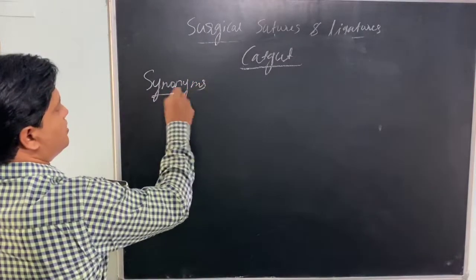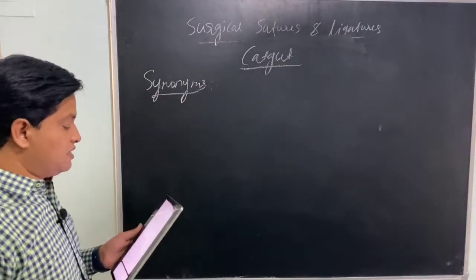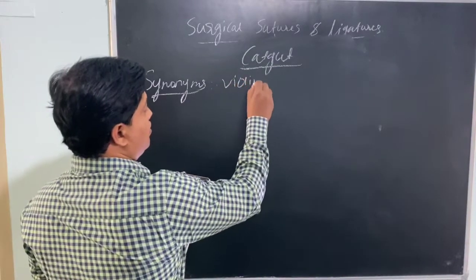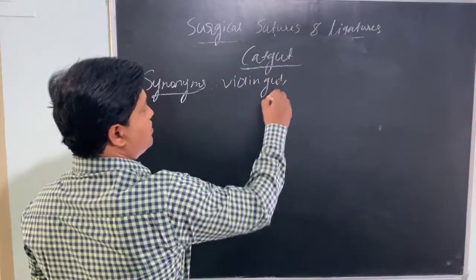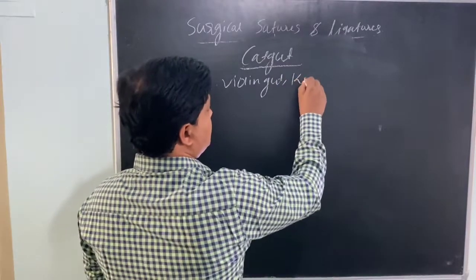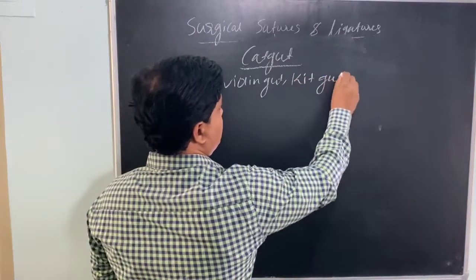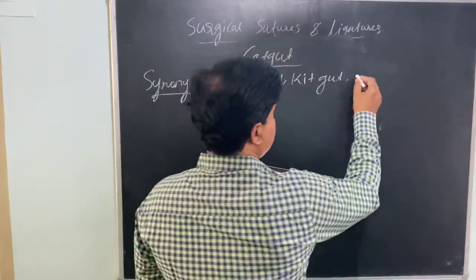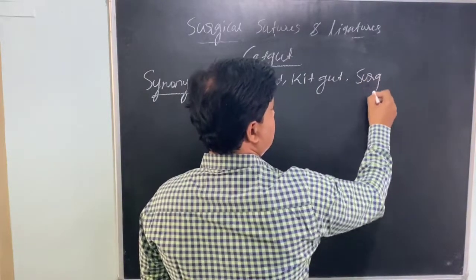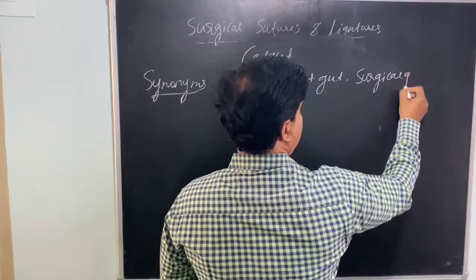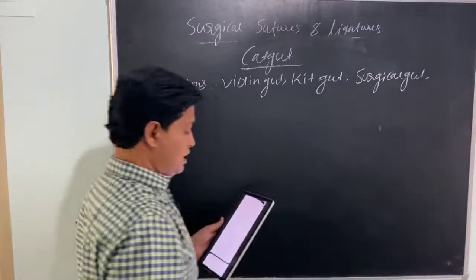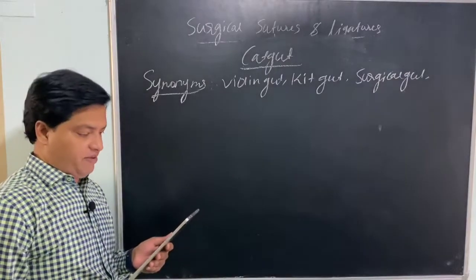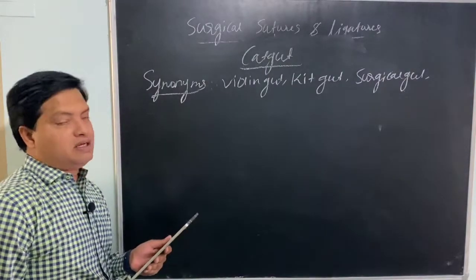What are the synonyms of catgut? We can call it violin gut, kidgut, surgical gut, or collagen fiber. These are the synonyms you need to remember.